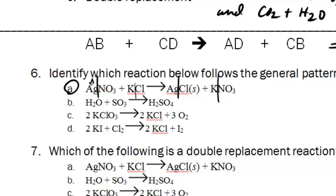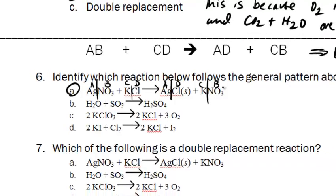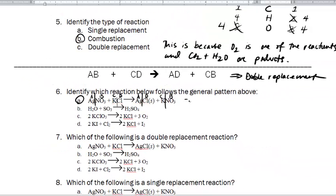If I label the silver as A and nitrate as B, if I label the potassium as C and the chloride as D, now I have A with D and then C with B. You just have to be able to figure out the parts of the formulas and see the double switch. All right. So this is double replacement, which is, that means the answer to question number seven is also A.